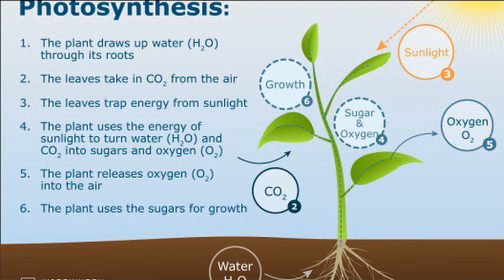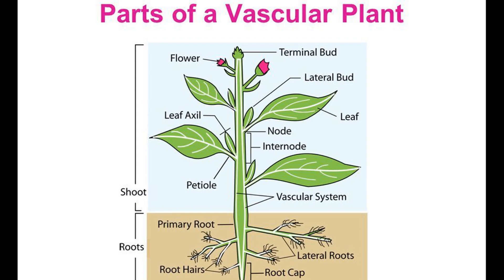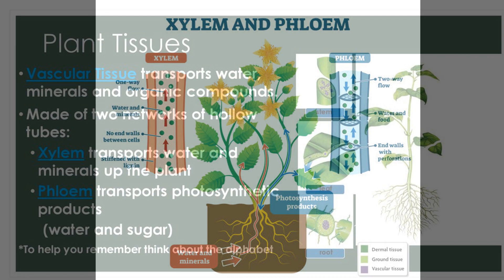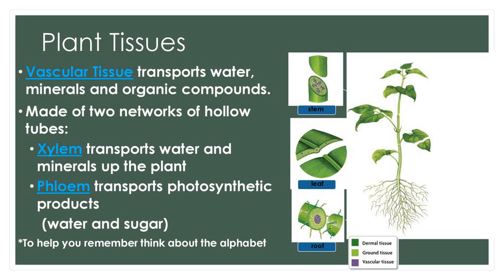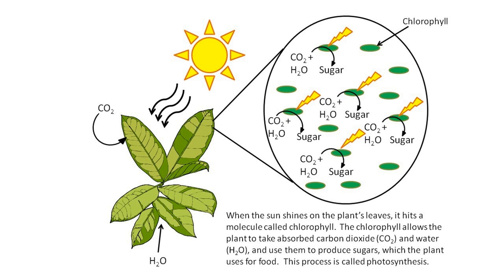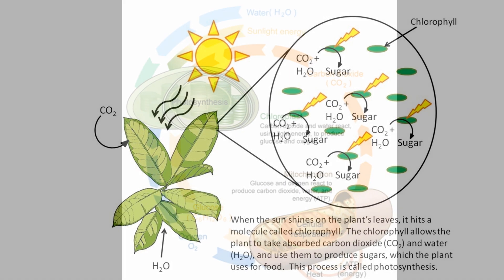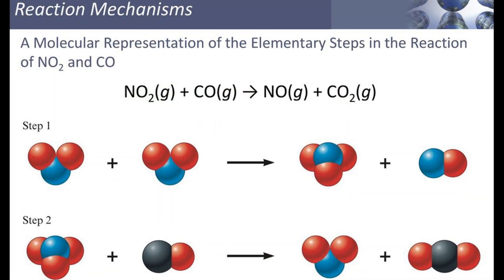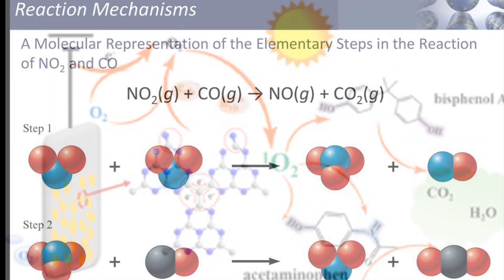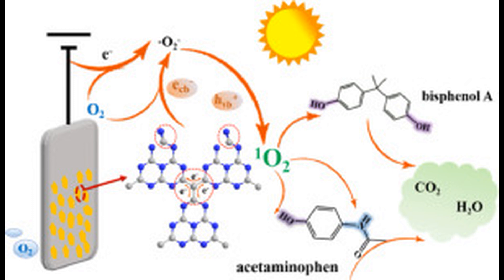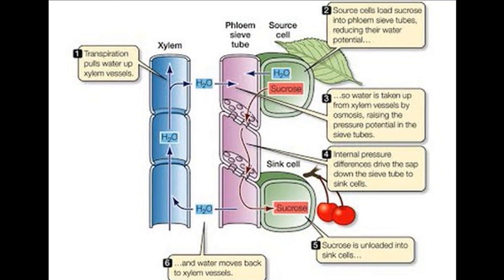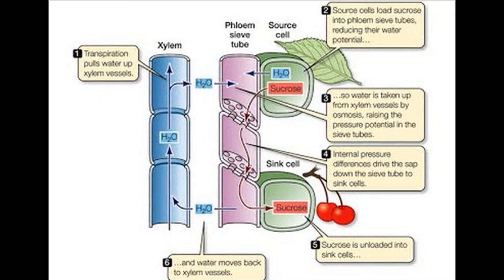All plants have a transport system called the vascular system, composed of two types of tissues: xylem and phloem. The xylem transports water and minerals upwards from roots through the leaves. The sunlight falling on the leaf is absorbed by chlorophyll to provide energy. This energy is used to split water molecules (H₂O) into hydrogen ions and hydroxyl ions (OH⁻). Subsequently, a series of chemical reactions occur — oxygen from the hydroxyl ion is released into the air, and hydrogen ions combine with carbon dioxide to form glucose. The phloem transports glucose made in the leaves to other parts of the plant in the form of sucrose.